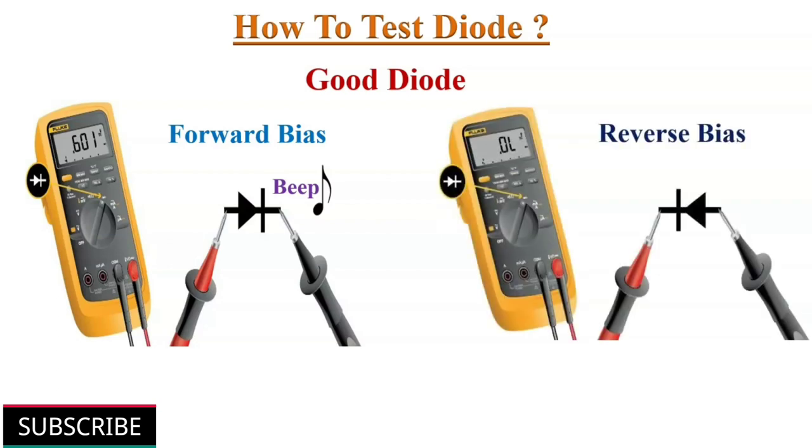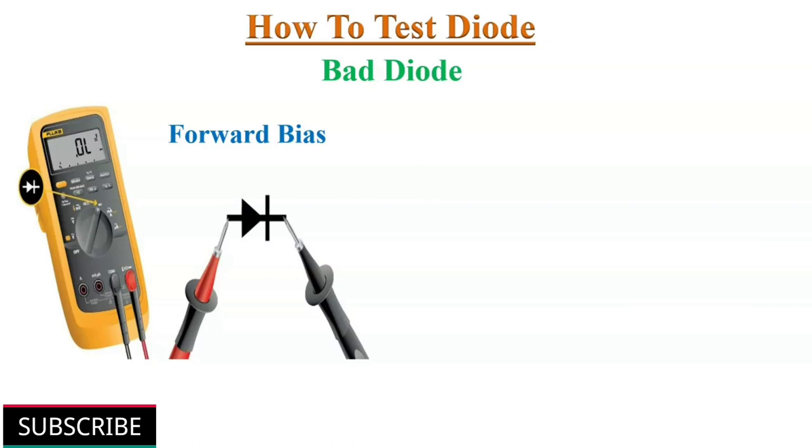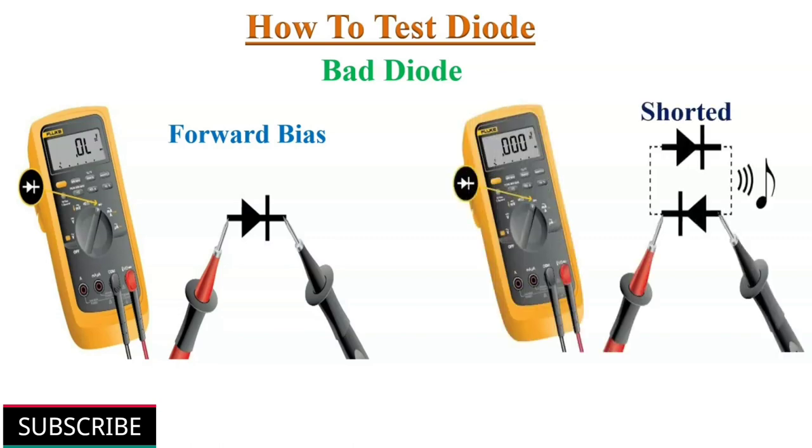If we reverse the probes connected to the diode, the meter display will read OL, which indicates out of limit value. If we get out of limit reading in forward bias and zero reading in reverse bias, the diode is faulty. Sometimes we get reading in both directions. Then the diode is short circuited. It's faulty.